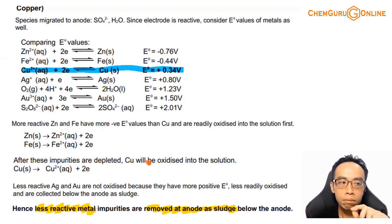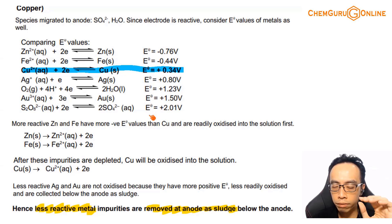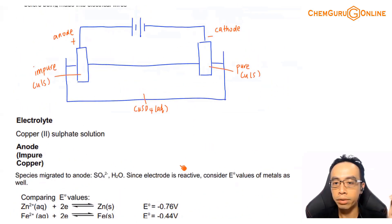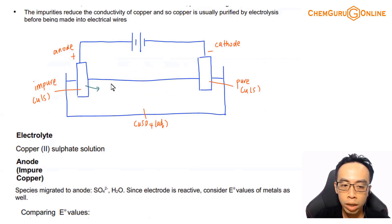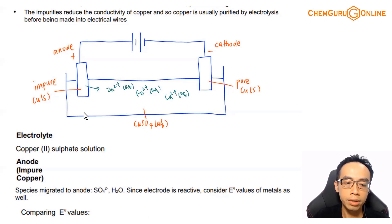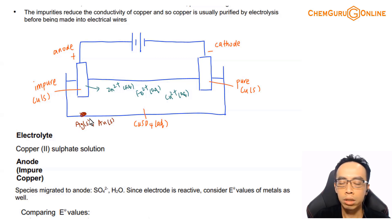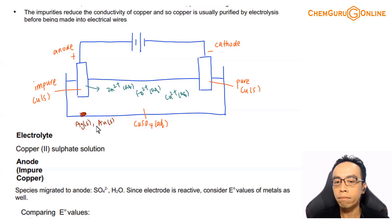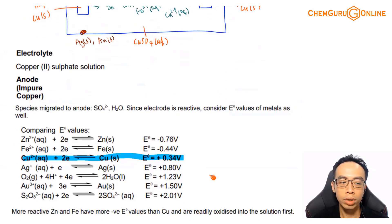For purification of copper, we must focus on how both types of impurities are removed. At the anode: more reactive metals like Zn²⁺ and Fe²⁺ dissolve into solution, while less reactive metals like silver and gold drop to the bottom as solid sludge along with non-conducting minerals. So the less reactive metals are removed by collection at the bottom of the anode.